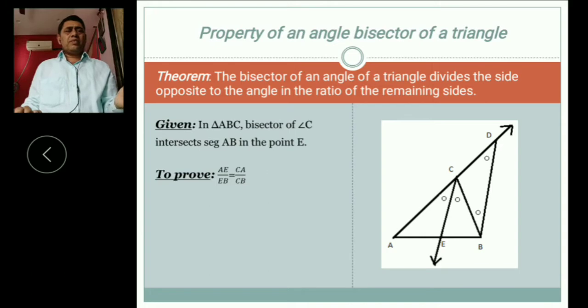For that we consider what we learn. We learn BPT, Basic Proportionality Theorem. In that there is a parallel line to a side. By using this theorem here I draw a parallel to CE, that is BD. This is our construction and AC extends up to D.